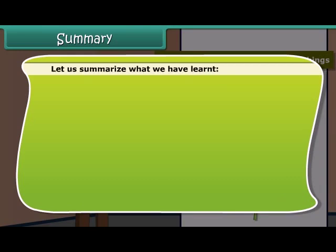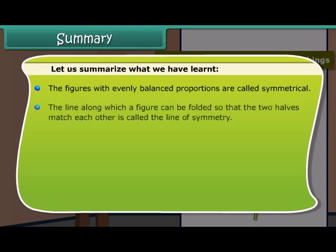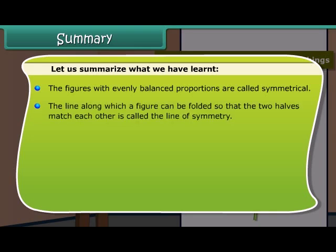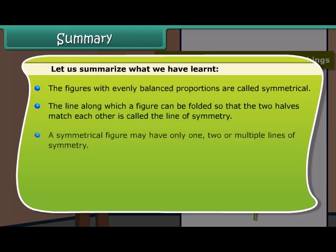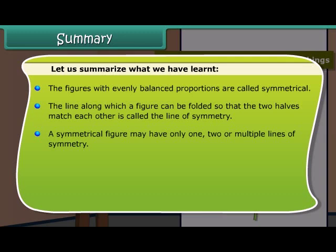Let us summarize what we have learned. The figures with evenly balanced proportions are called symmetrical. The line along which a figure can be folded so that the two halves match each other is called the line of symmetry. A symmetrical figure may have only one, two or multiple lines of symmetry.